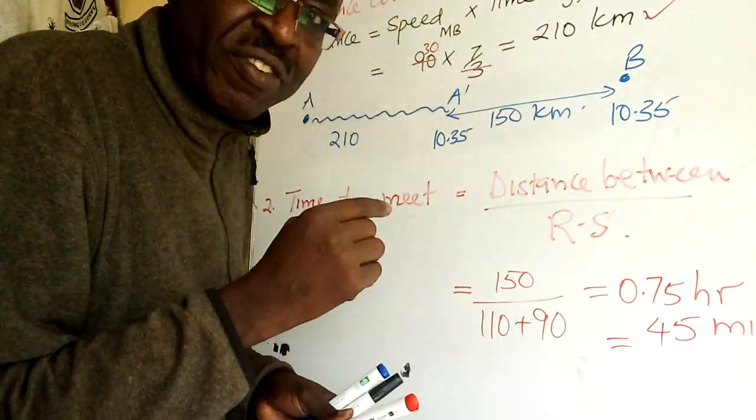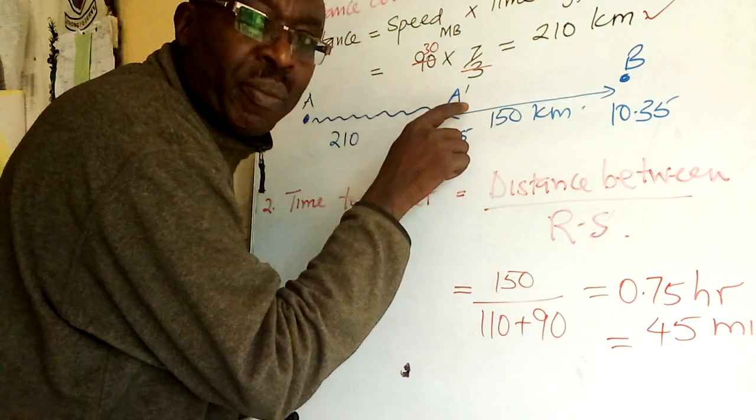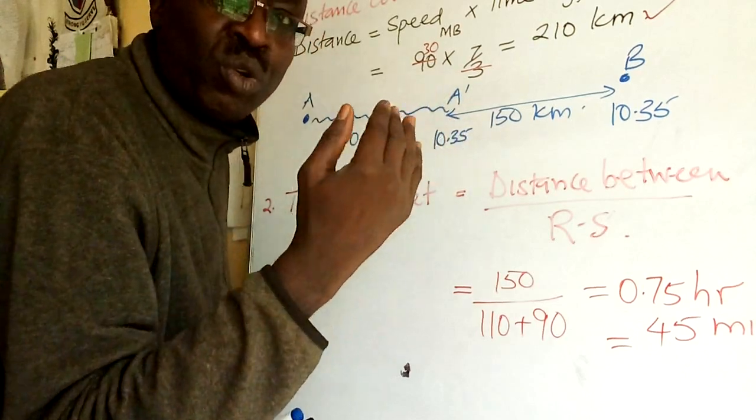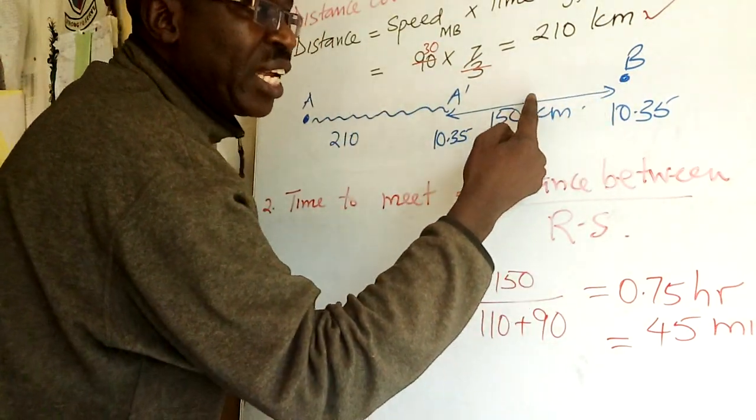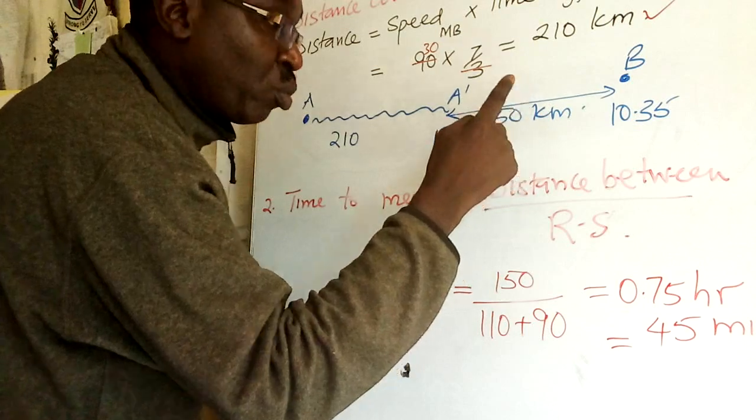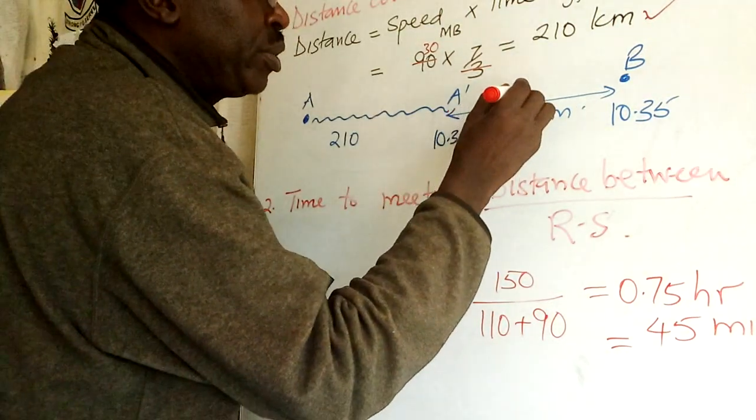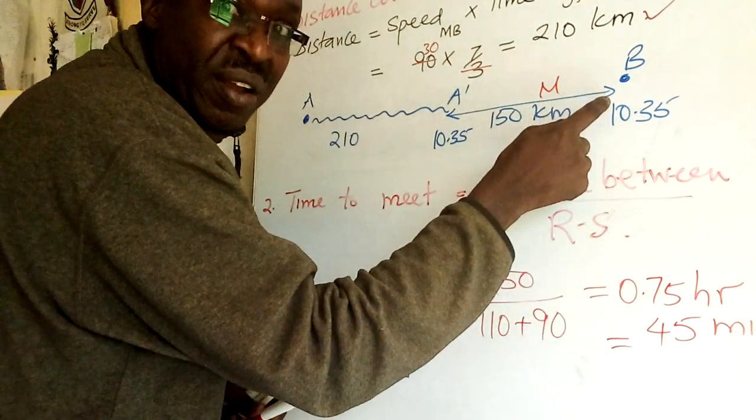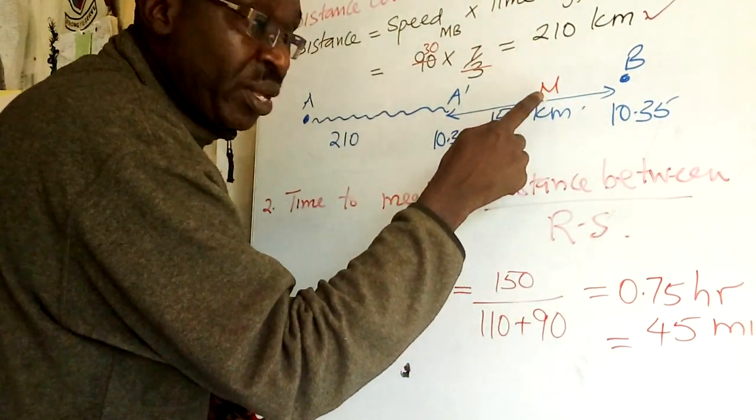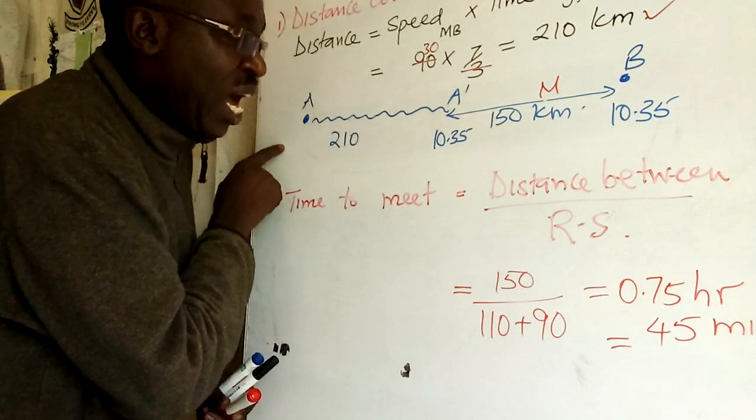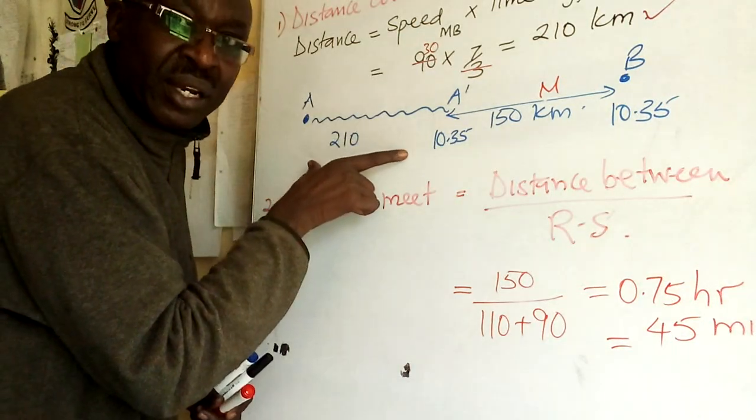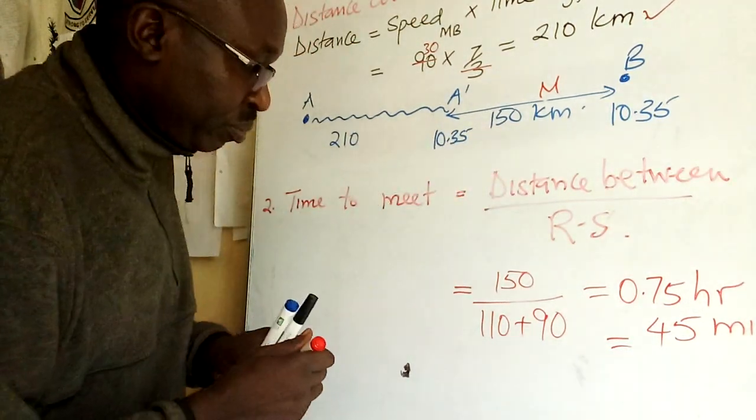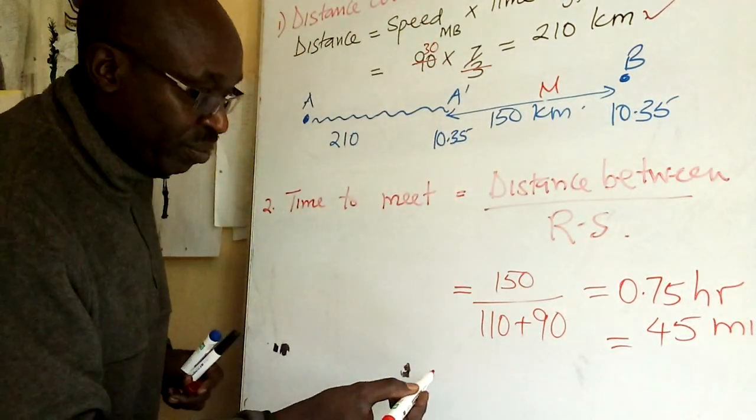So 7.5 times 6, you'll get 45 minutes. Now they meet after 45 minutes from this position. B has taken 45 minutes to the meeting point M.